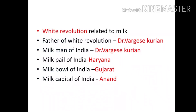The White Revolution is called Operation Flood. The Father of the White Revolution in India is Dr. Verghese Kurien. The milk bowl of India is called Gujarat, with the city of Anand being notably significant.